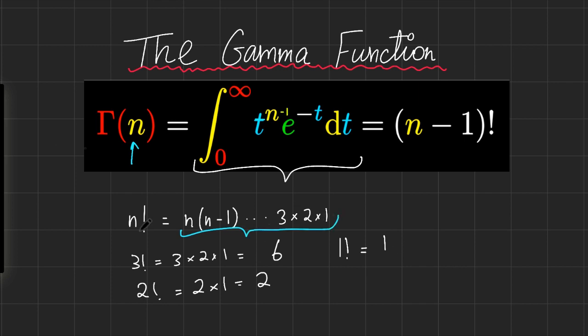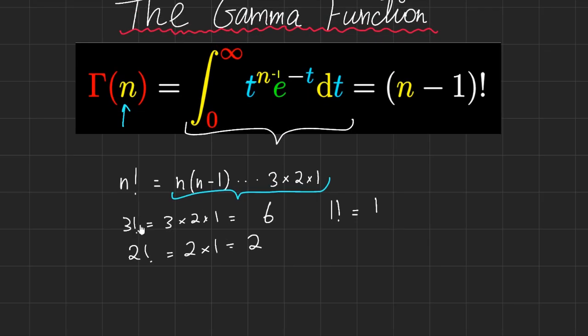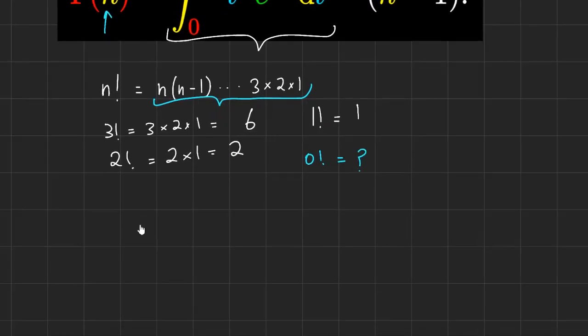So what is 0 factorial? That might be an interesting question to ask. Note that we defined the factorial for positive integers only. So 0 factorial, according to our definition, actually has no meaning — but maybe we can extend our definition. First off, let's investigate why the factorial function is even relevant. As it turns out, it's very important for permutations and combinatorics.